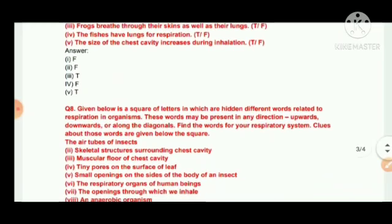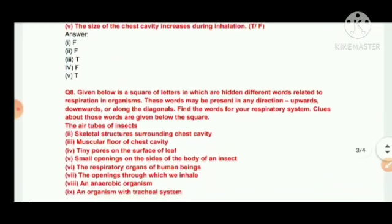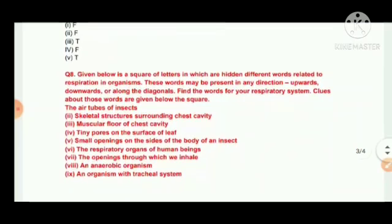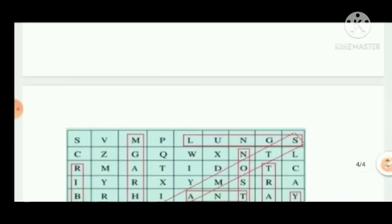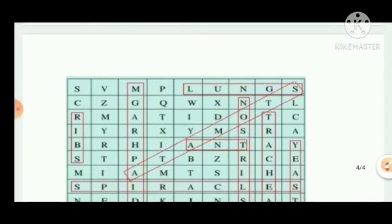Given below is a square of letters in which are hidden different words related to respiration in organisms. These words may be present in any direction, upwards, downwards or along its diagonals. Find the words for your respiratory system. Clues about those words are given below the square. The air tubes of insects, this is number 1.